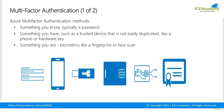Multi-factor authentication is a process where a user is prompted during sign-in for an additional form of identification, such as entering a code on their cell phone or providing a fingerprint scan. Using only a password leaves an insecure vector for attack — if the password is weak or has been exposed elsewhere, that causes issues. When you require a second form of authentication, security increases. Azure MFA works by requiring two or more authentication methods.